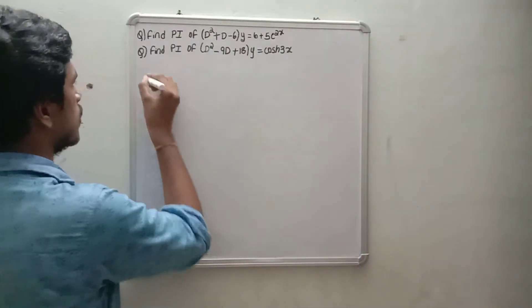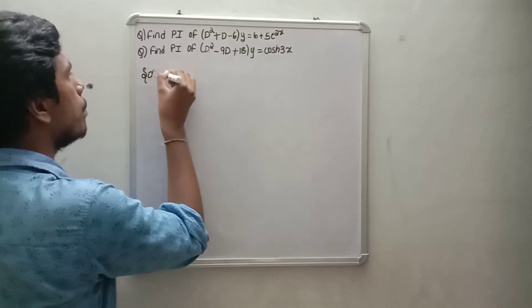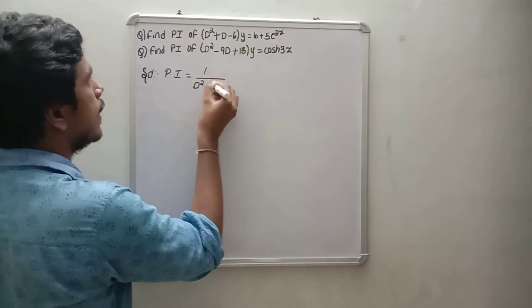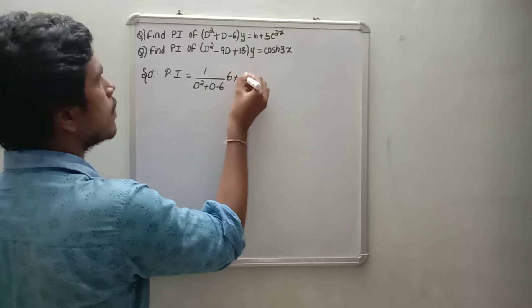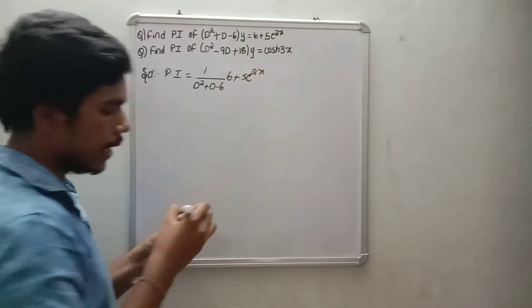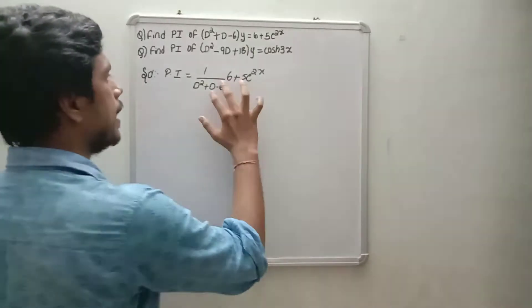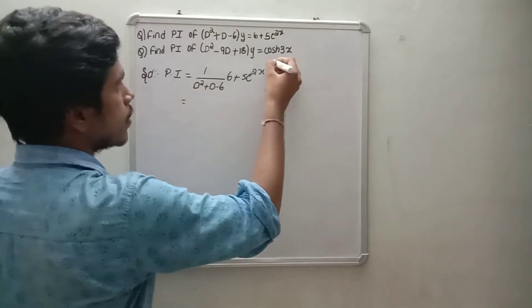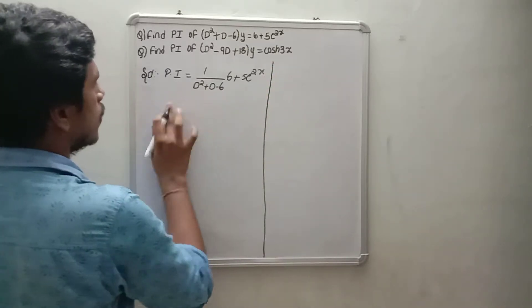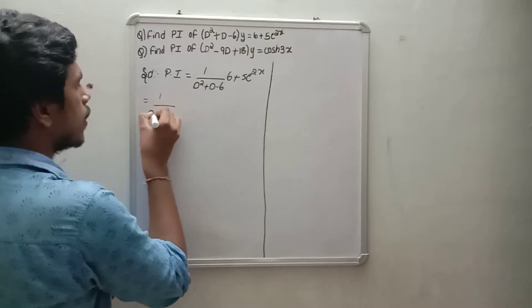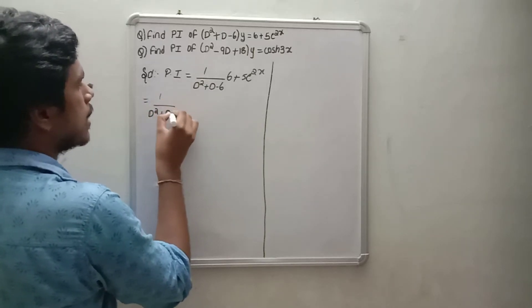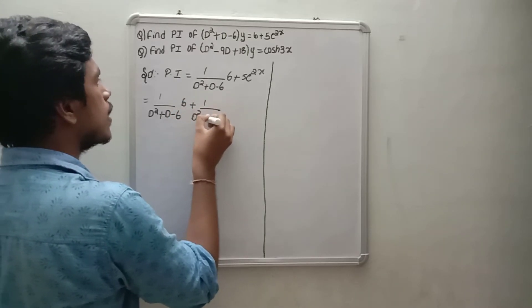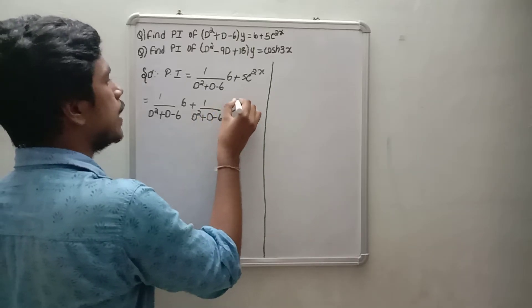The solution: PI is equal to 1 by (D squared plus D minus 6) into (6 plus 5e to the power 2x). Since there are two terms, we separate them: 1 by (D squared plus D minus 6) into 6, plus 1 by (D squared plus D minus 6) into 5 times e to the power 2x.